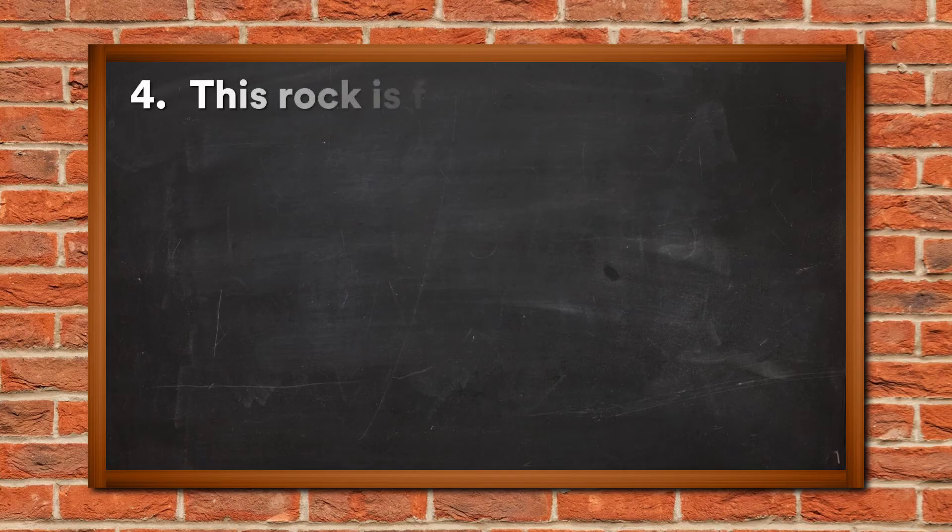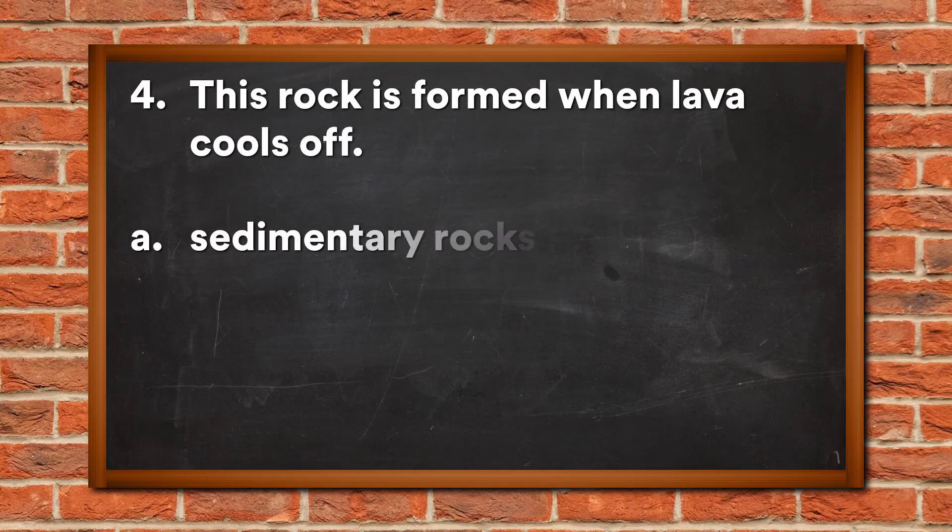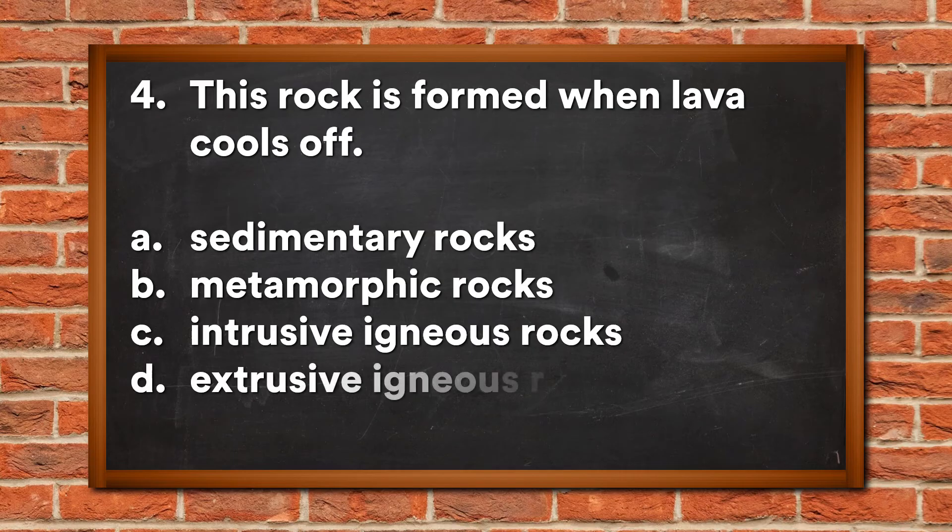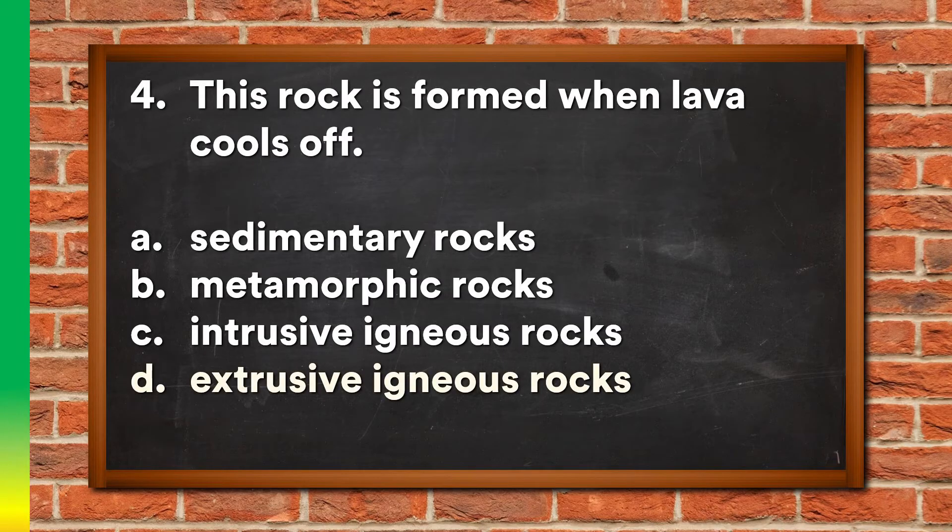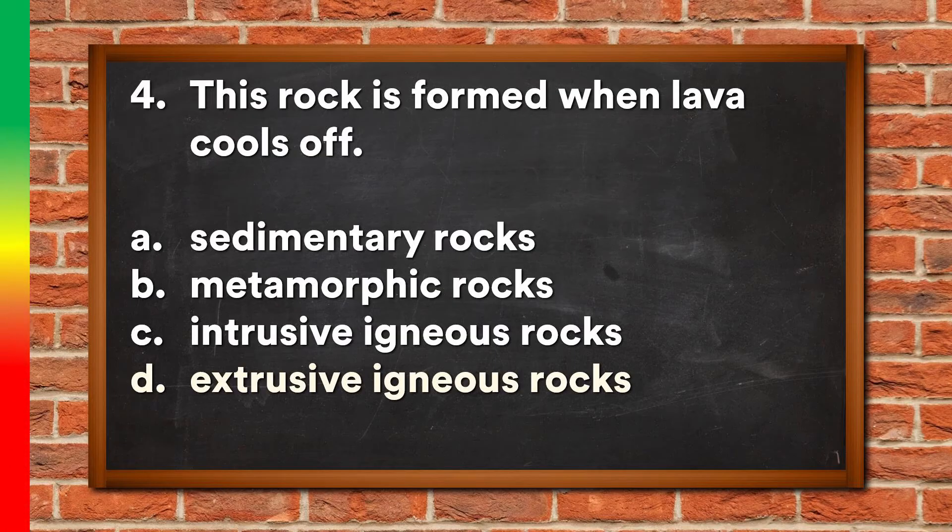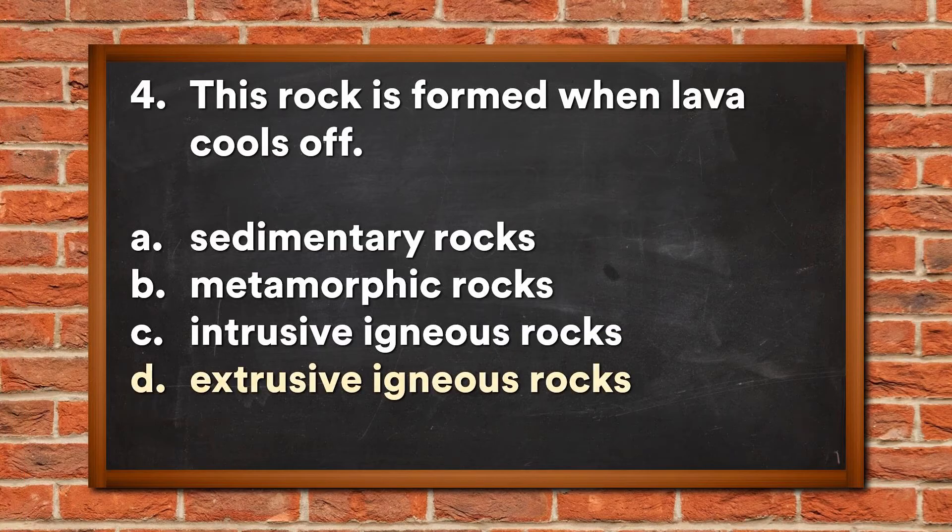Question 4: This rock is formed when lava cools off. A. Sedimentary rocks, B. Metamorphic rocks, C. Intrusive igneous rocks, D. Extrusive igneous rocks. The answer is D, Extrusive igneous rocks.